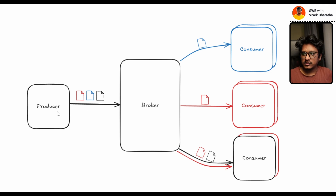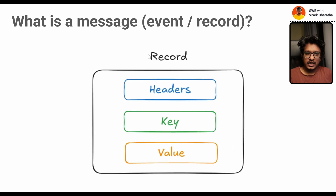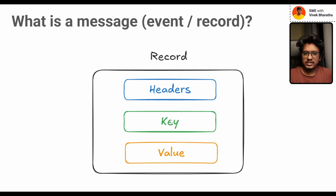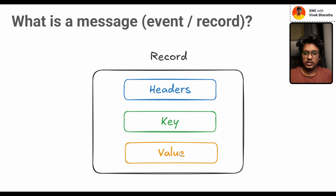Before moving on to the core blocks like producers and consumers, let's start with what exactly a message contains. In Kafka, a message can also be termed as an event or a record. On a high level, we have three different fundamental blocks inside a message. First is headers, which holds all the meta information including the topic name. Next is key, which is optional but most of the time will be used in real-world applications — I'll cover what exactly the key is shortly. Next is value — self-explanatory — whatever information you want to send in that specific message will be stored in the value. Total, we have three main blocks: headers, key, and value inside each record.